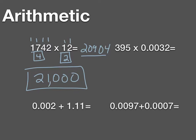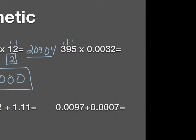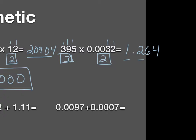For the next example, 395 has three significant figures. 0.0032 has two significant figures — the leading zeros are not significant. The smaller number of significant figures is two, so my answer must have two. Multiplying them: my calculator gives 1.264. Rounded to two significant figures, my answer is 1.3 — not 1.30000, which would imply greater precision than I actually have.